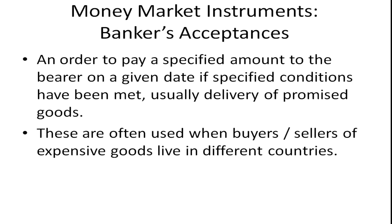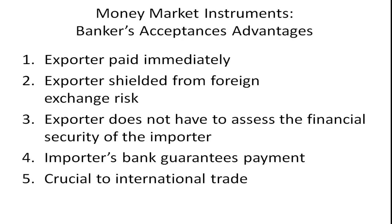Another important money market instrument is known as a banker's acceptance. This is an order to pay a specified amount to the bearer on a given date, if specified conditions have been met — and those specified conditions are usually the delivery of promised goods. These are often used when buyers or sellers of expensive goods live in different countries, where it can be difficult to know much about the company you're exporting something to.